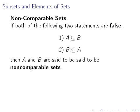Non-comparable sets: if both of the following statements are false—A is a subset of B and B is a subset of A—then A and B are said to be non-comparable sets.